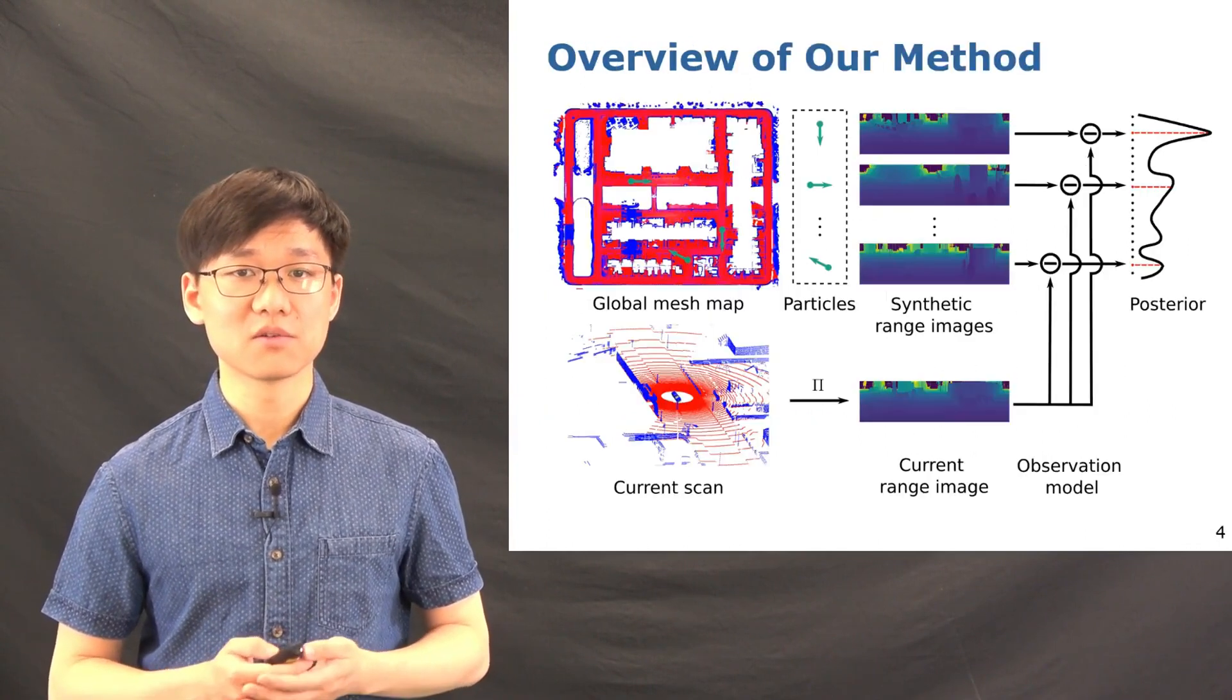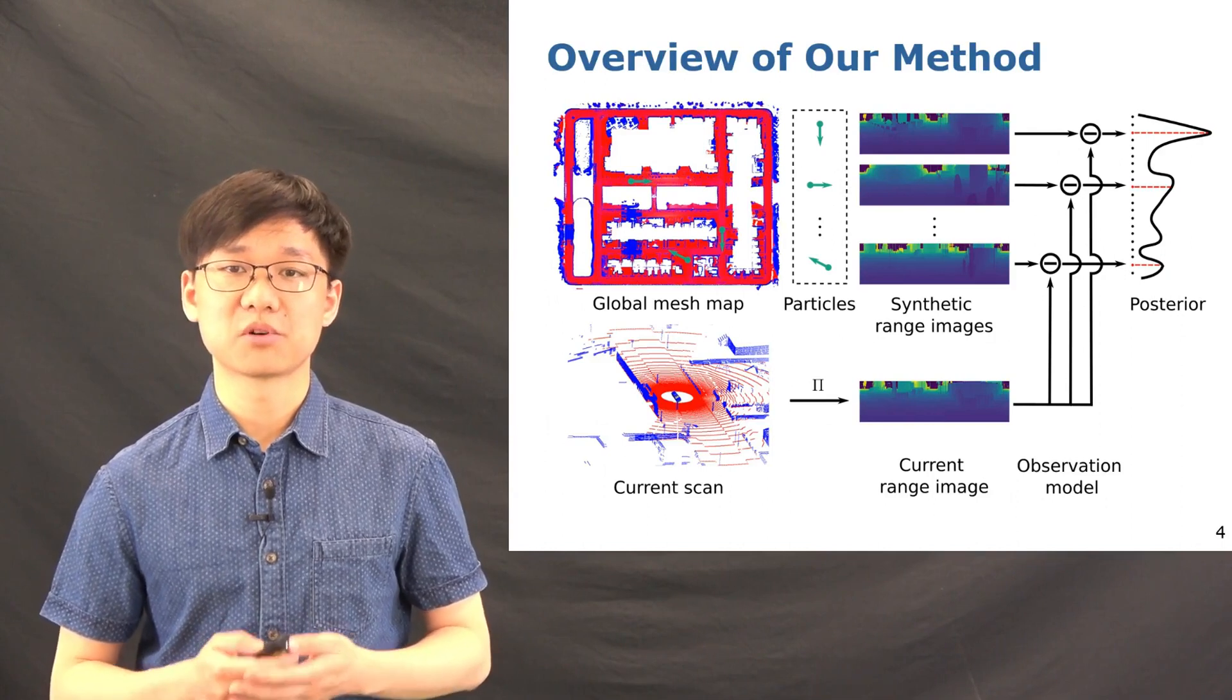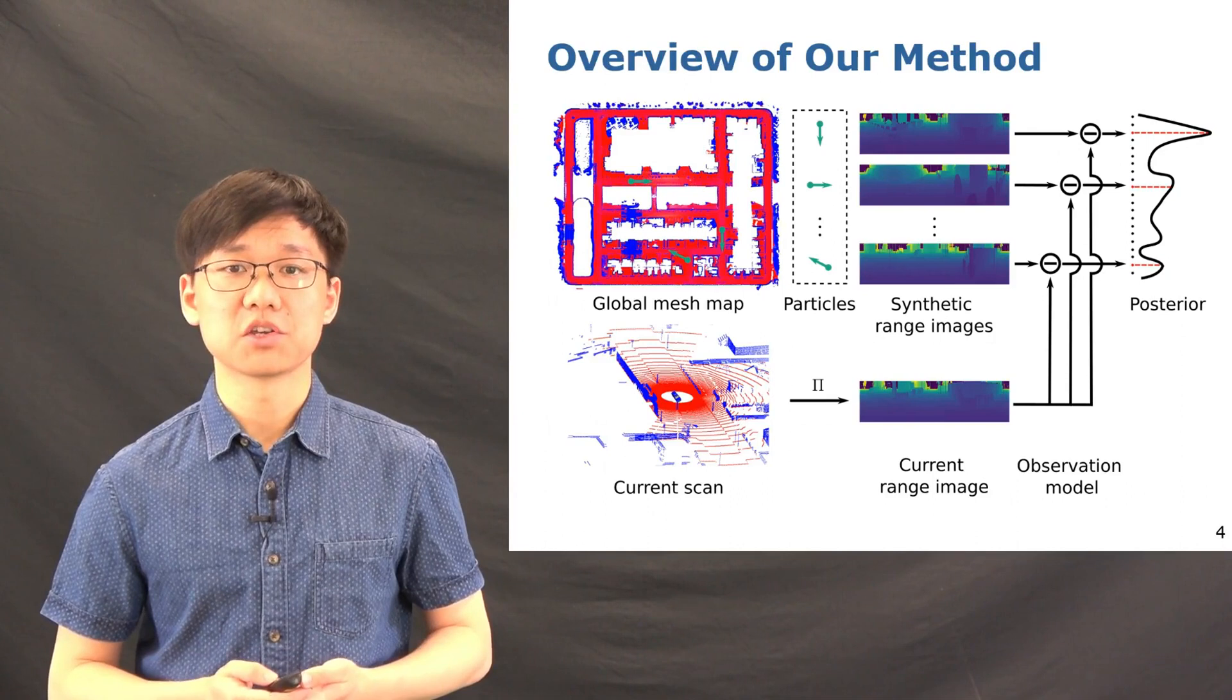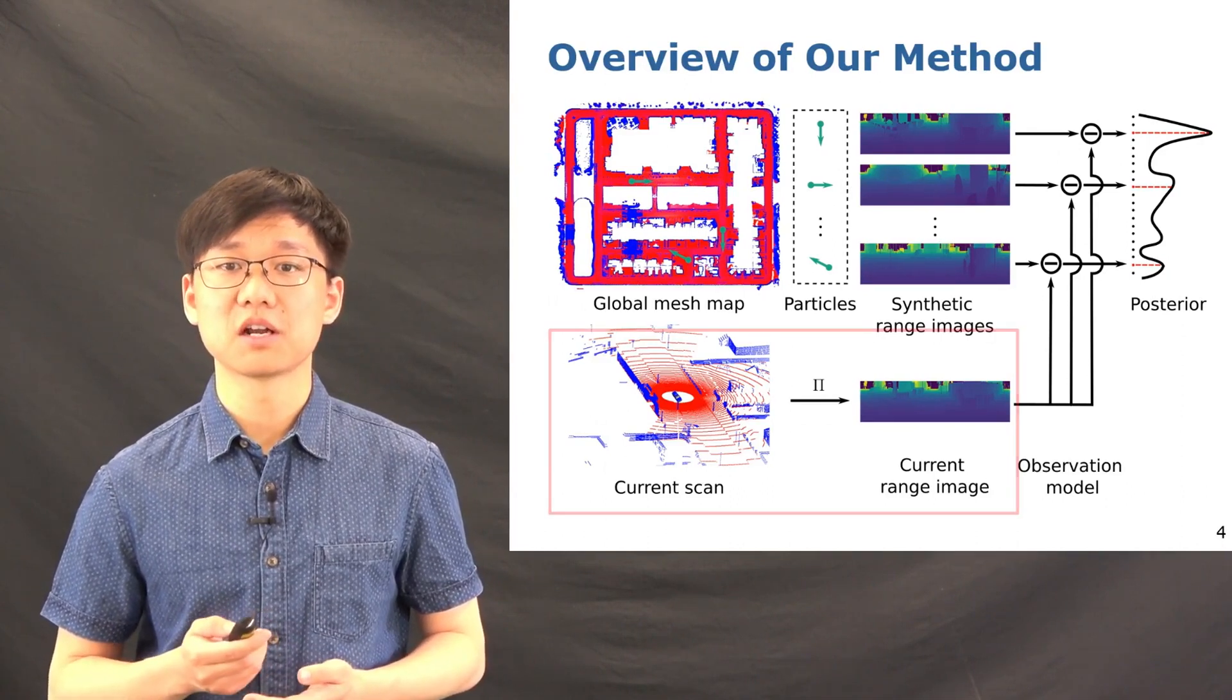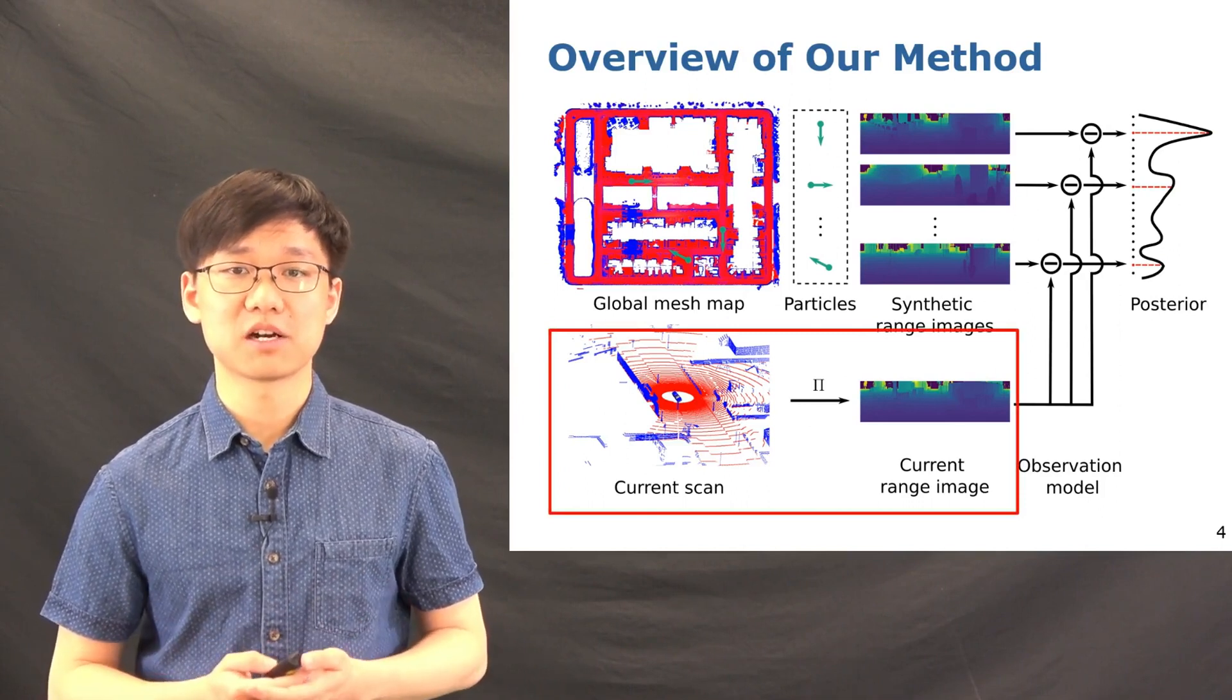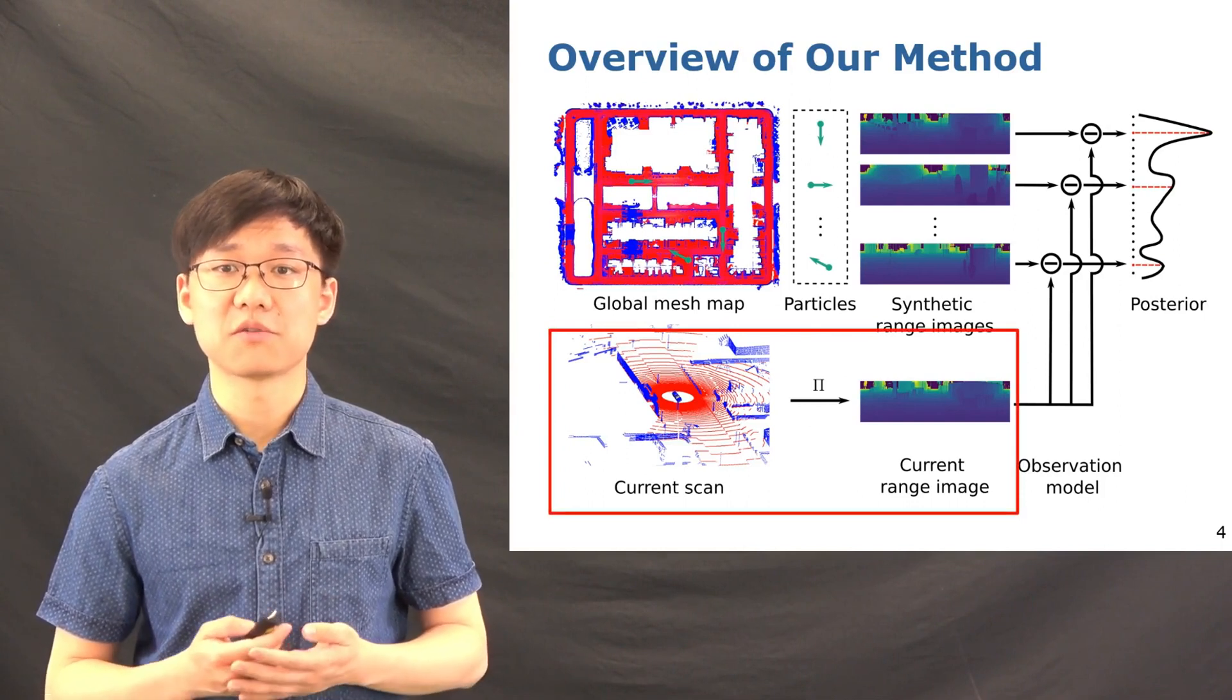This is an overview of our approach. In this work, we propose a probabilistic global localization system for autonomous vehicles using a 3D LiDAR sensor. As shown in the figure, in the lower part, we first project the LiDAR point clouds into a range image, which is a light representation of the LiDAR scan.